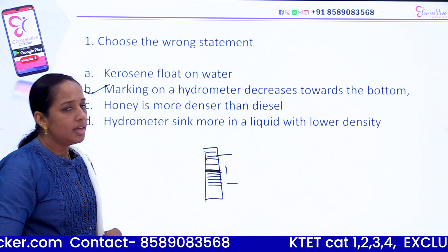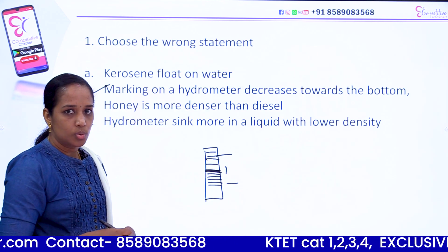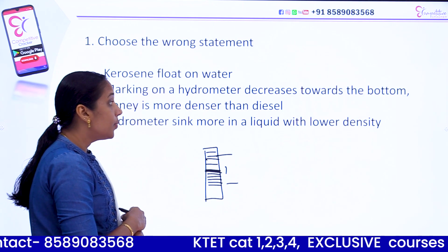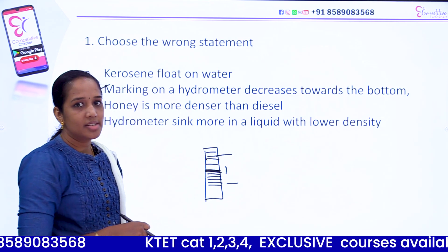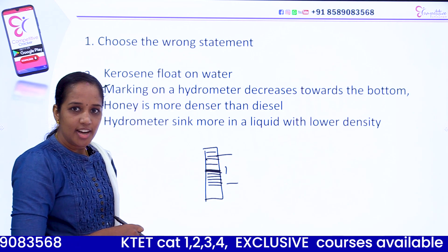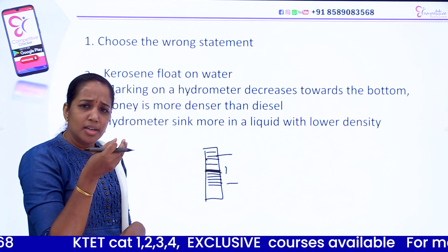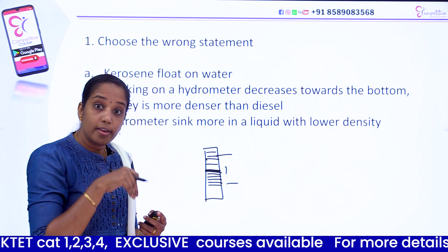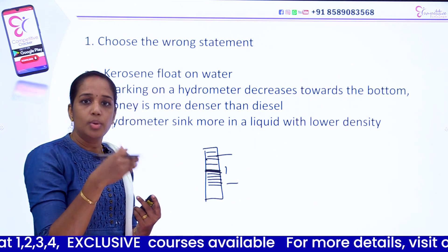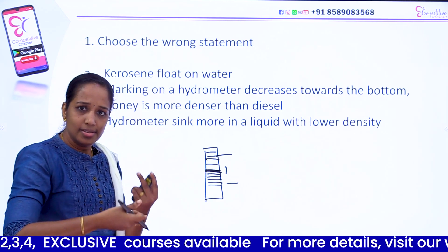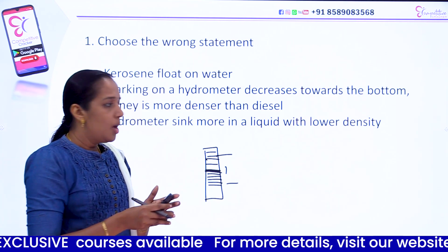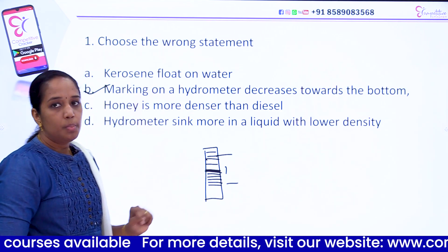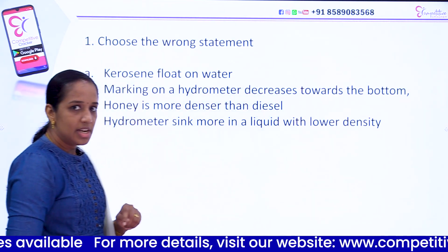Third statement: Honey is more dense than diesel — that's true. Fourth statement: Hydrometer reading in liquid of lower density is quite high. That statement is also true. So the wrong statement is the third one regarding the hydrometer decreasing. The answer is the second statement.